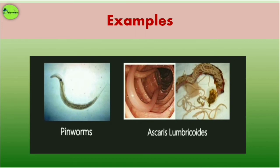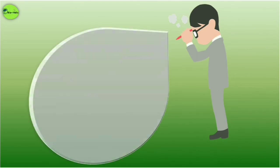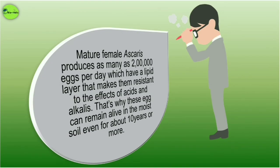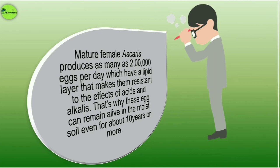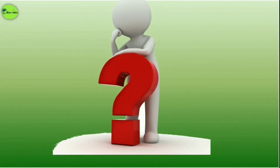Two examples of Aschelminthes are pinworms and Ascaris lumbricoides. An interesting fact: the mature female Ascaris produces as many as 200,000 eggs per day. These eggs have a lipid layer that makes them resistant to acids or alkalis, which is why they can remain alive in moist soil for about 10 years or more.